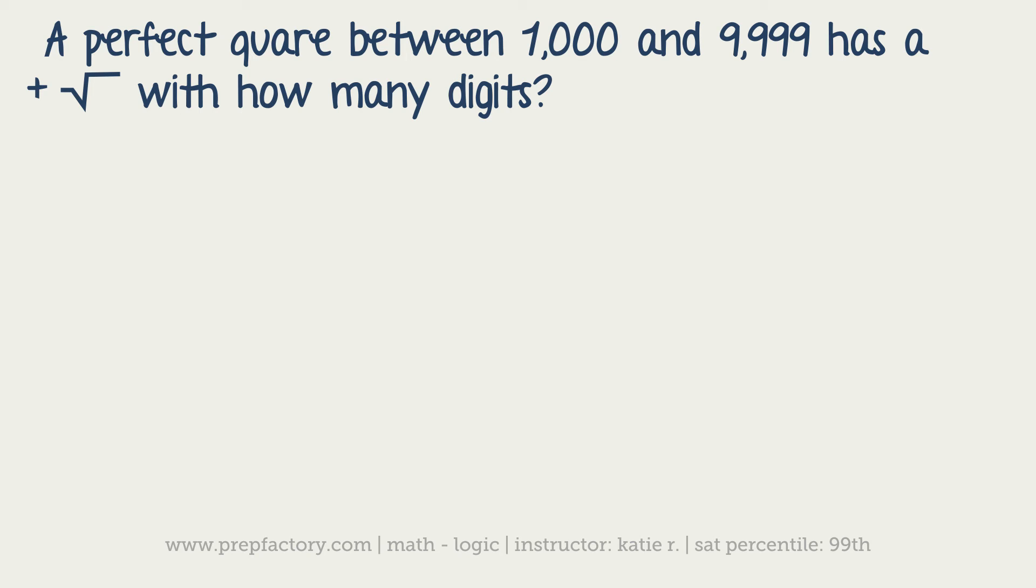When I saw this problem, I said I know that 10,000 is a perfect square. If I square 10,000, you're just going to get 100. So you know that the square root has to be less than 100.